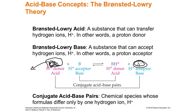The conjugate base is also a base because it could catch that ball again. The A negative just stands in for any of thousands of different acids. Conjugate acid-base pairs are chemical species whose formulas differ only by one hydrogen. So HA loses the hydrogen — A becomes negative, that's the conjugate base. B is the base; when it accepts the hydrogen ion H+, it becomes BH+, the conjugate acid.